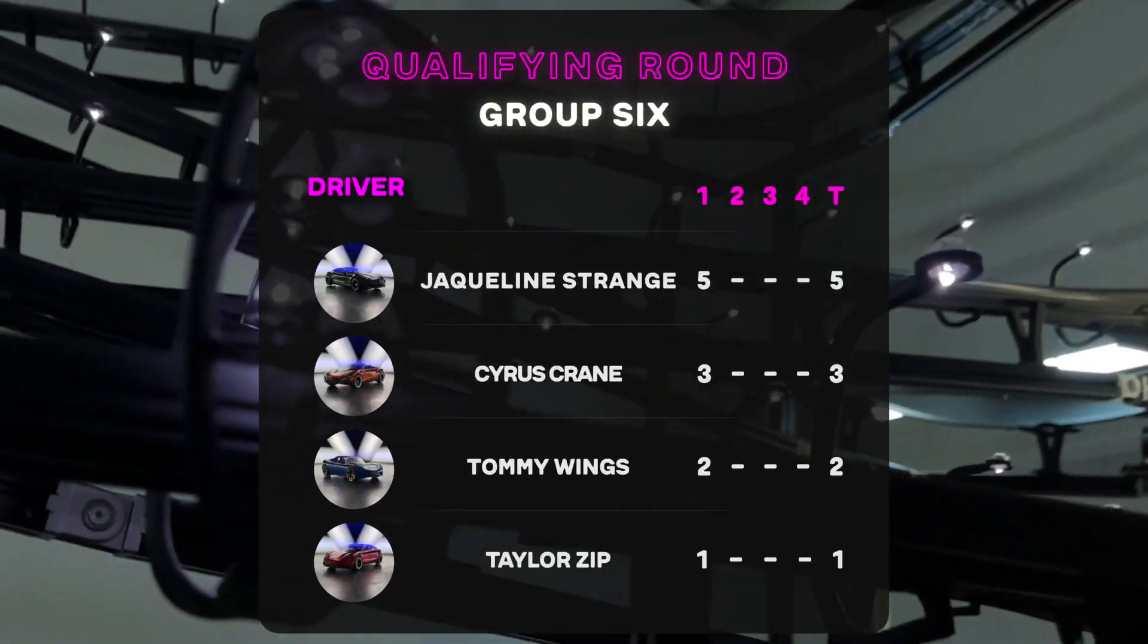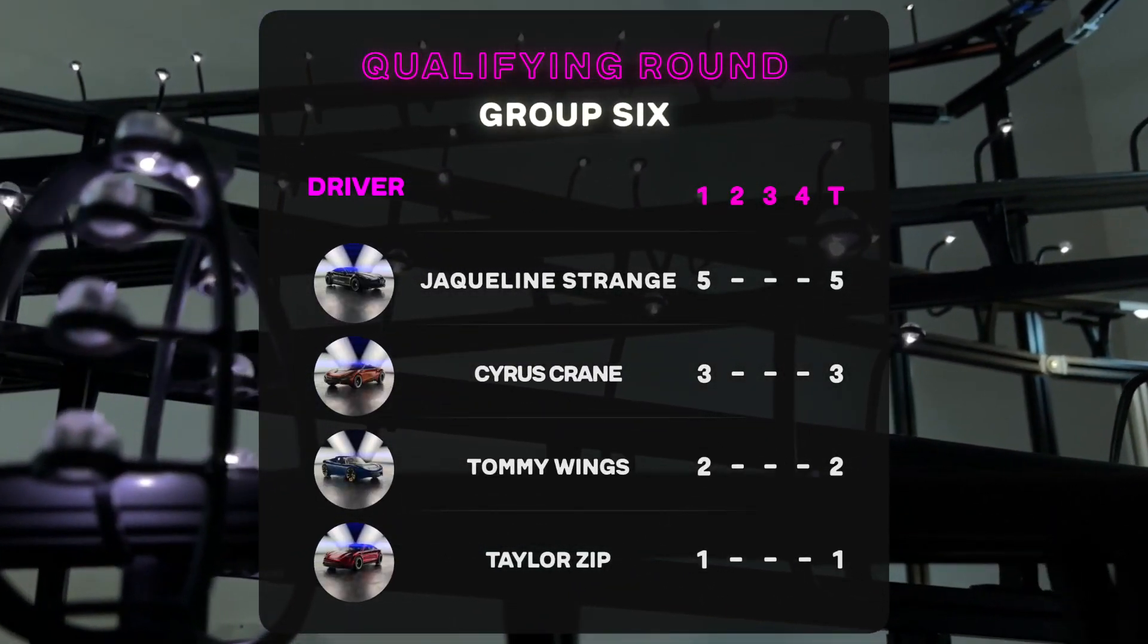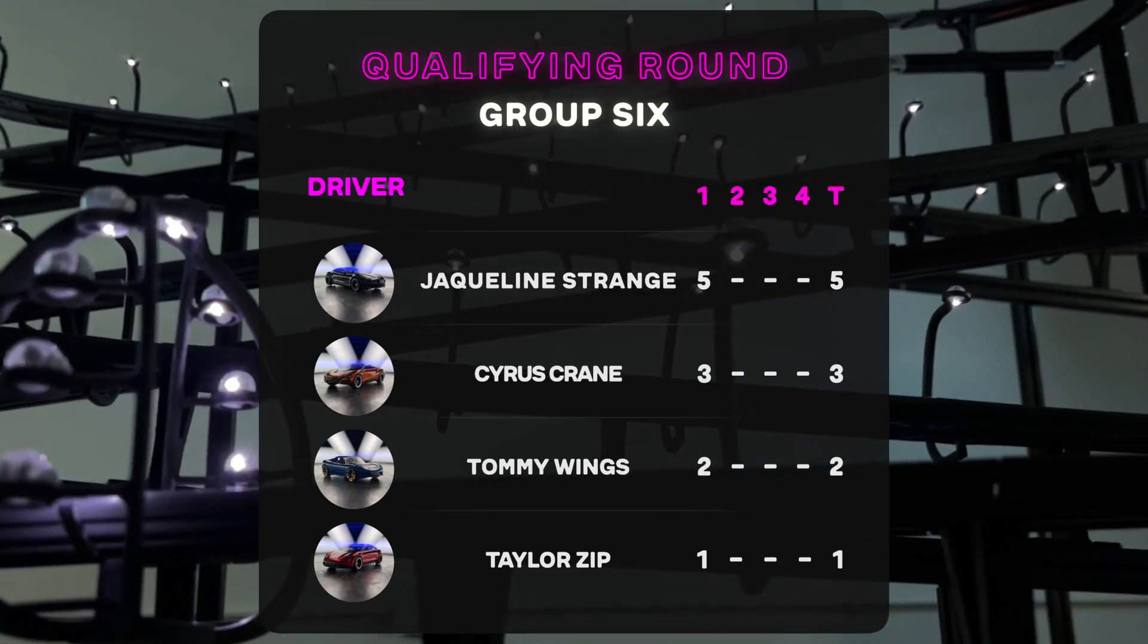If this is any indication, Group 6 is going to fight for it. Jacqueline Strange effortlessly takes first place, Cyrus Crane in second position, and Tommy Wings right at the last moment reaches for third. Now in front, let's see what Tommy Wings can do with nothing in his way.